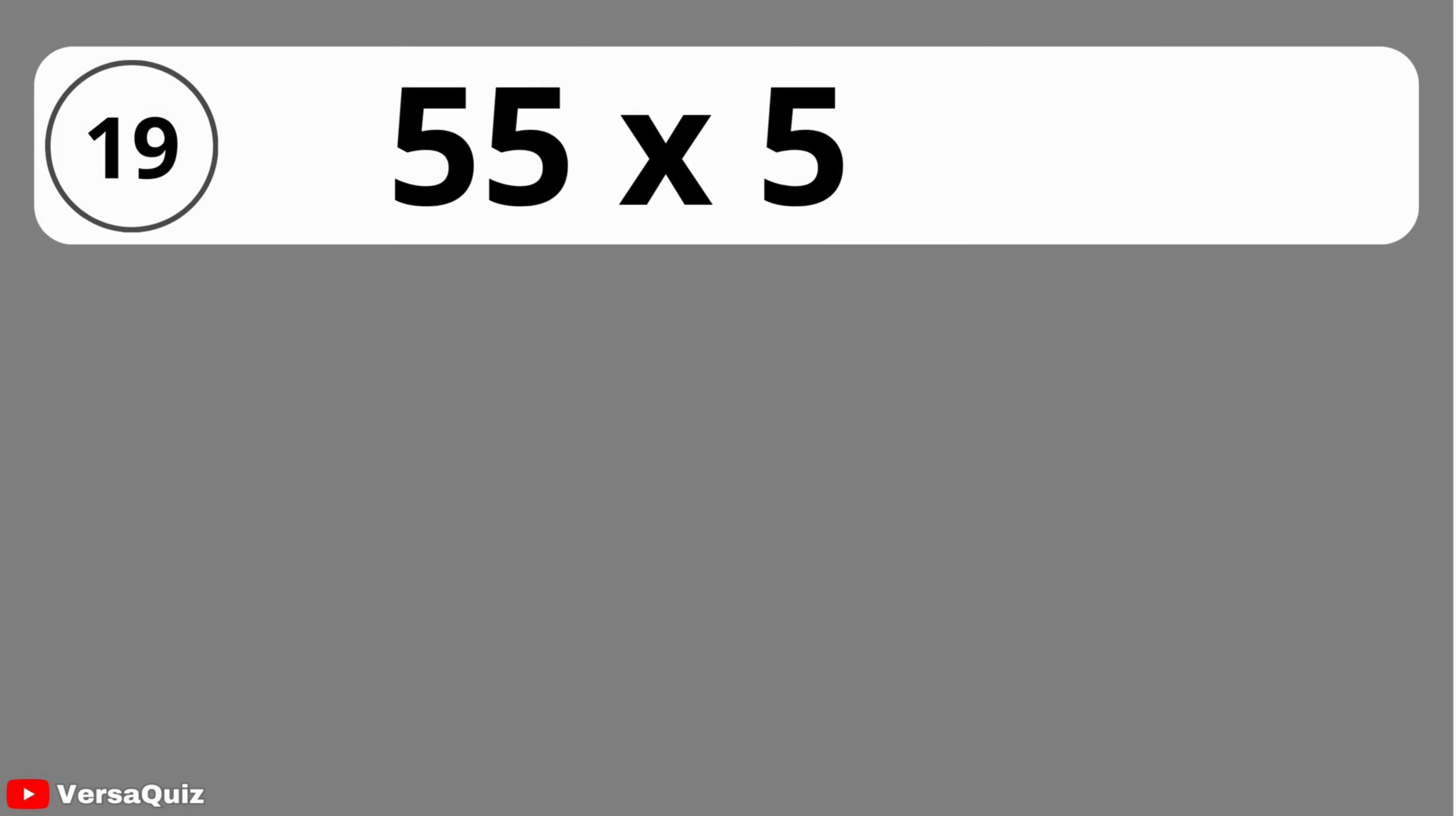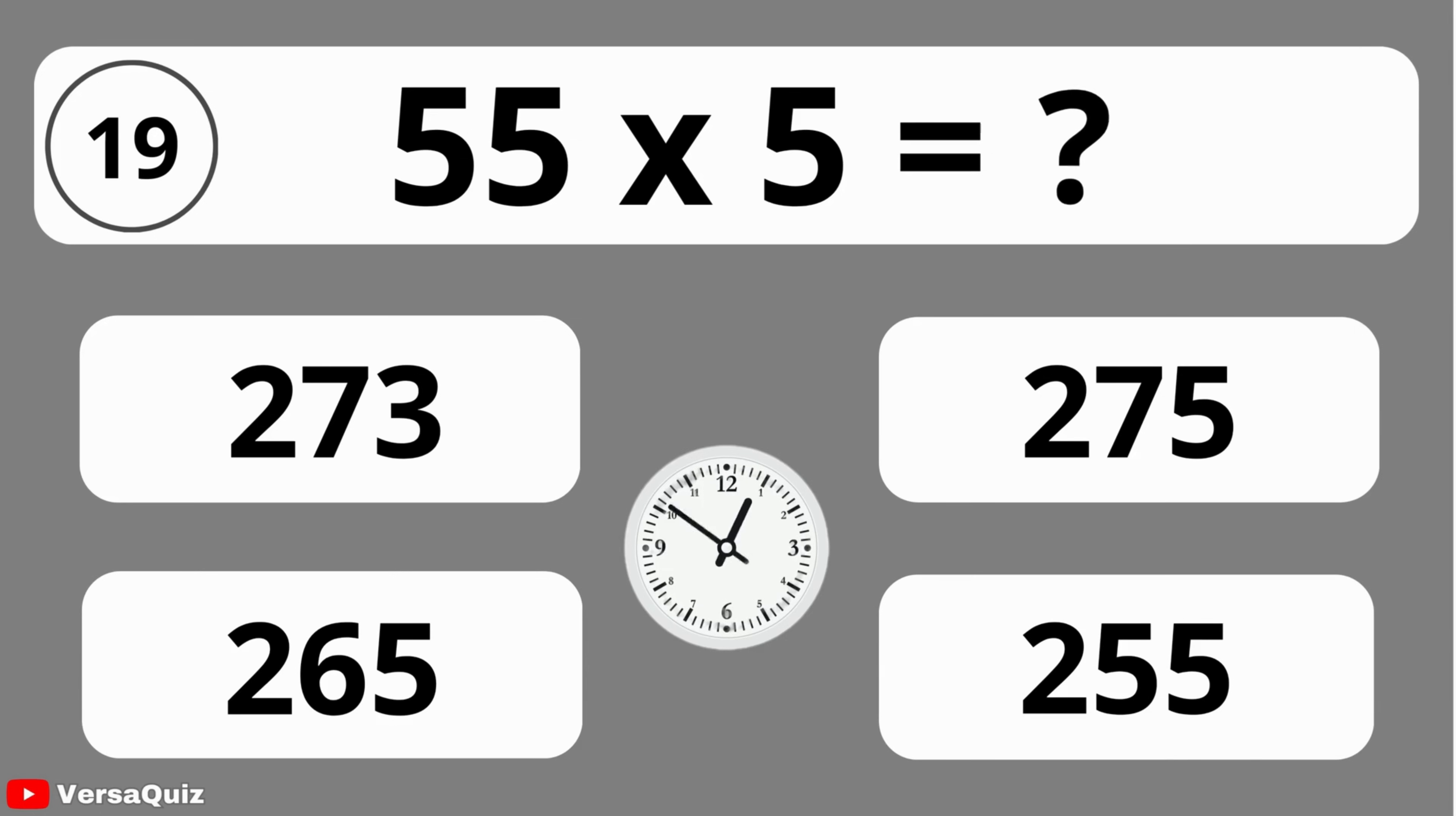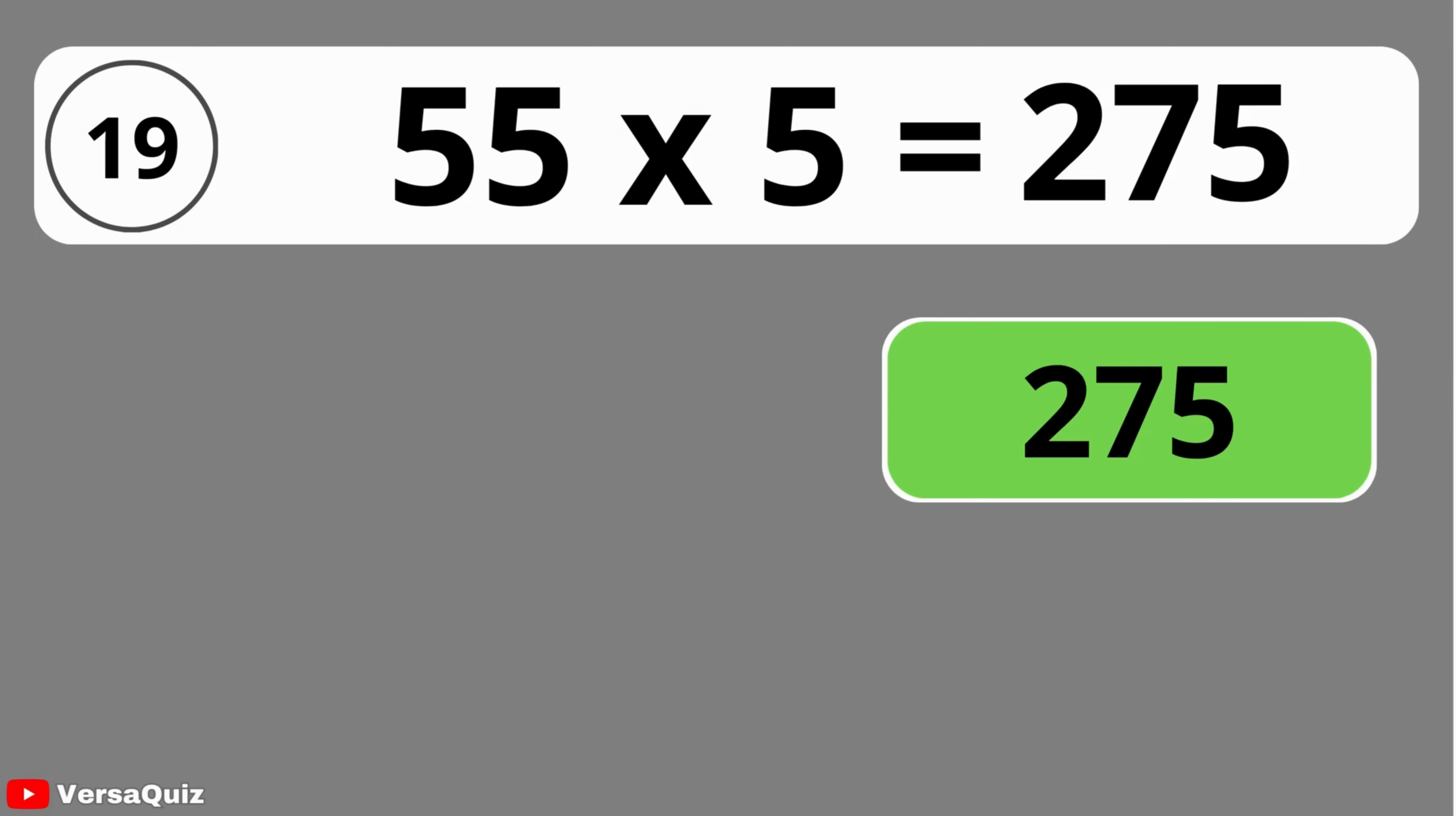What is 55 times 5? 273, 275, 265, or 255? When you multiply 55 by 5, the result is 275.